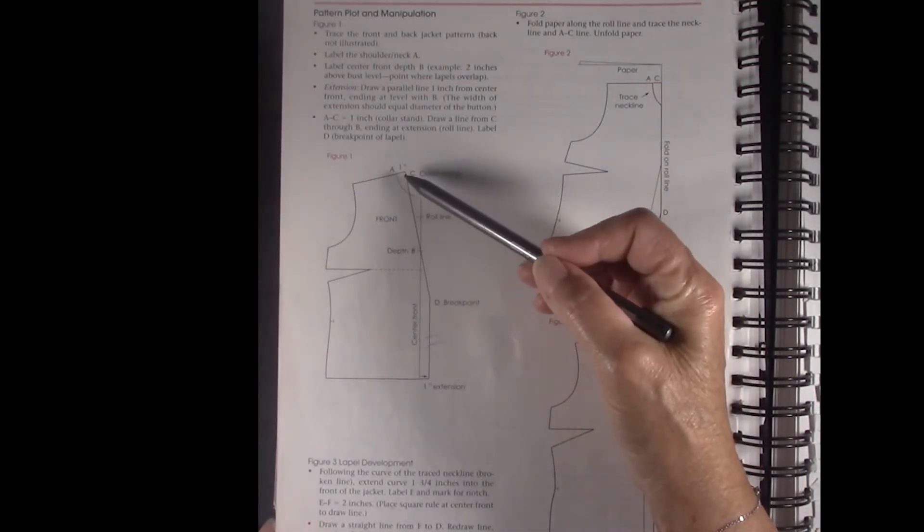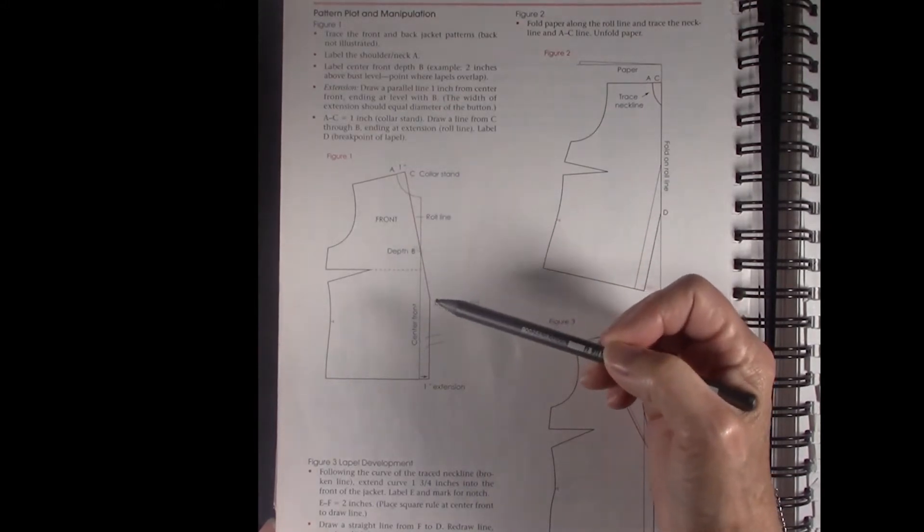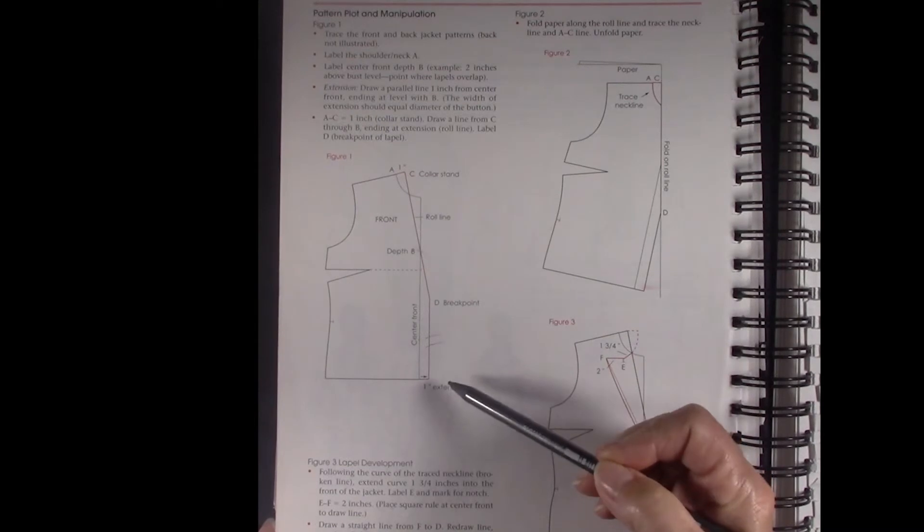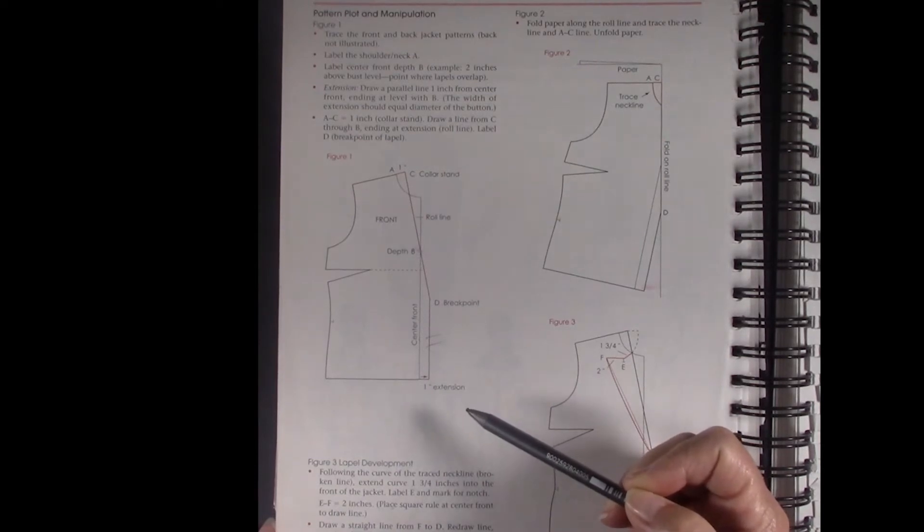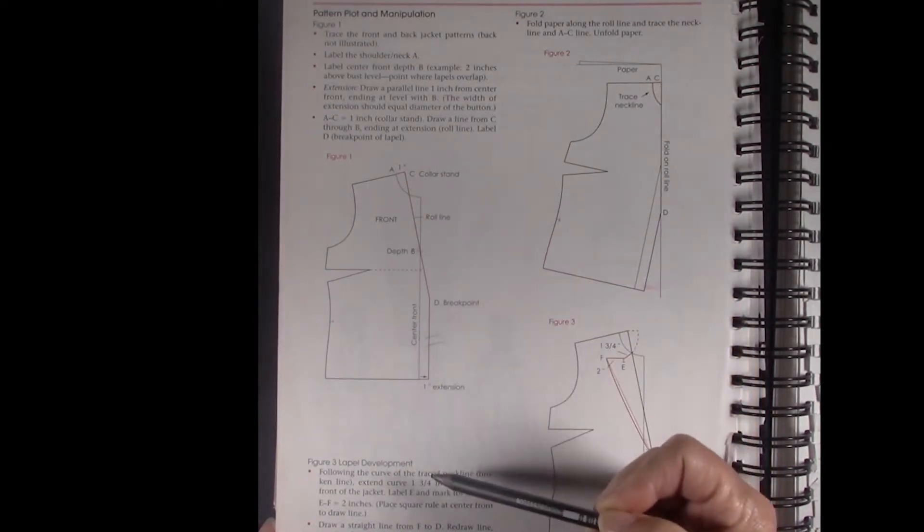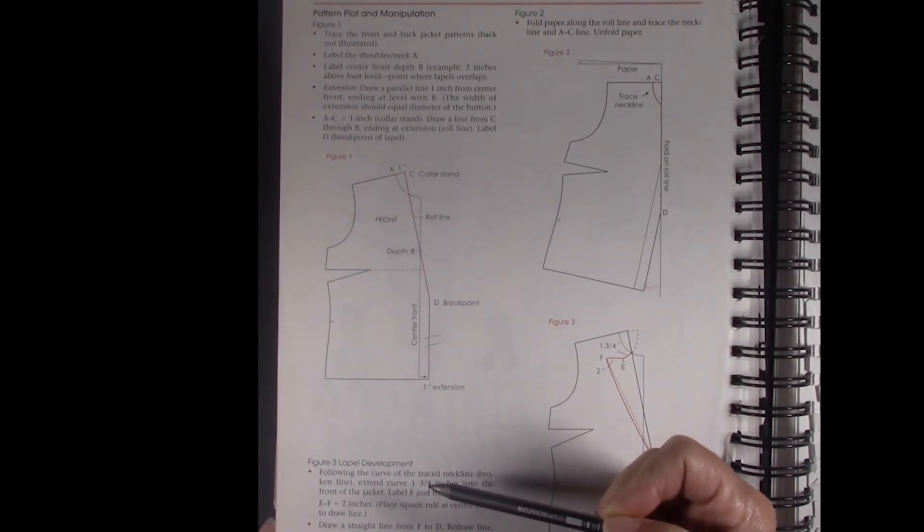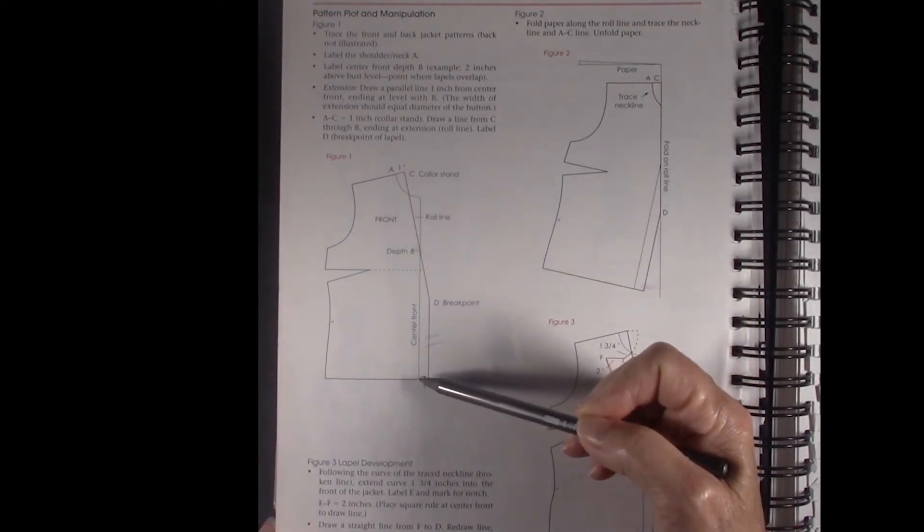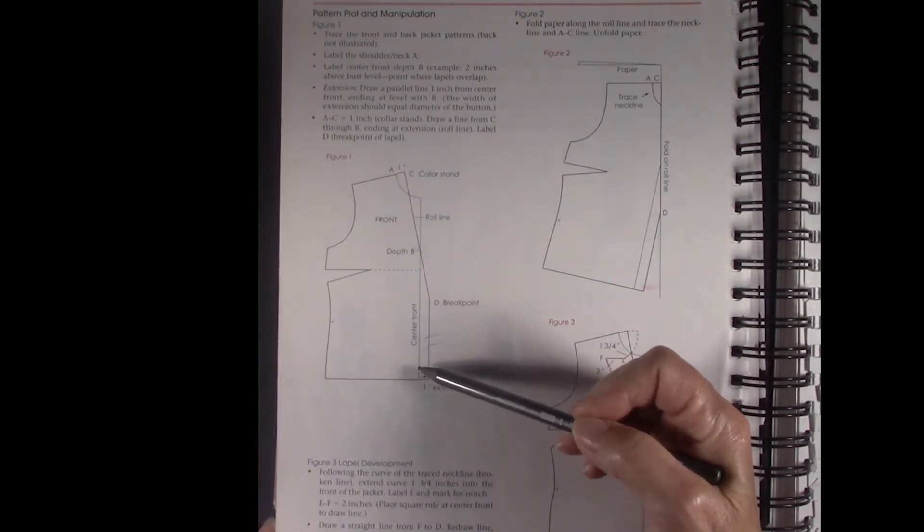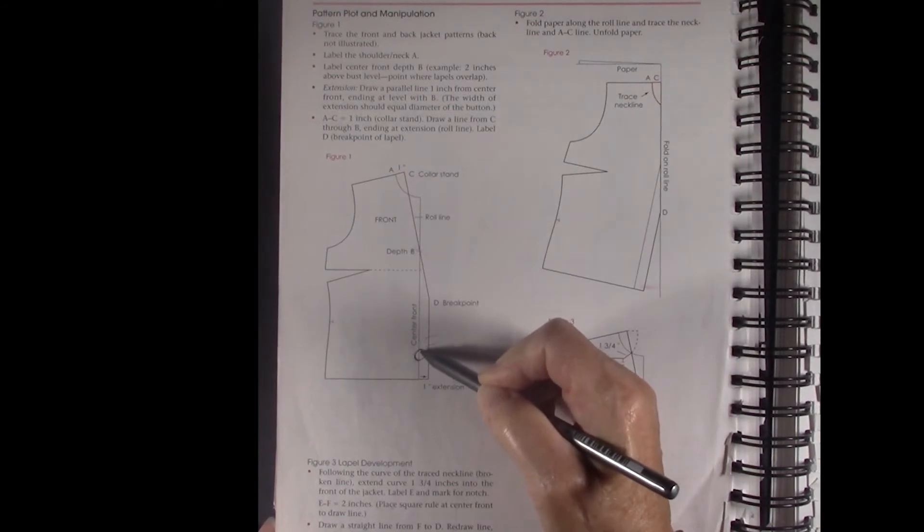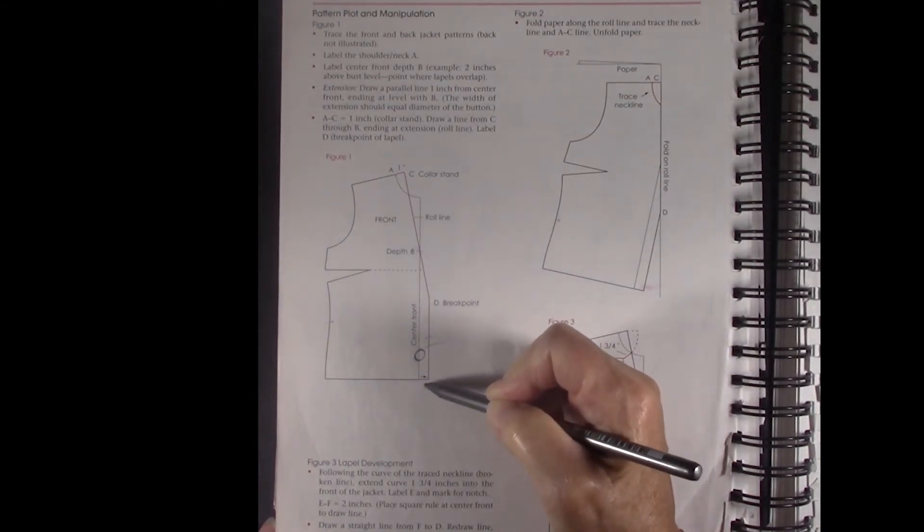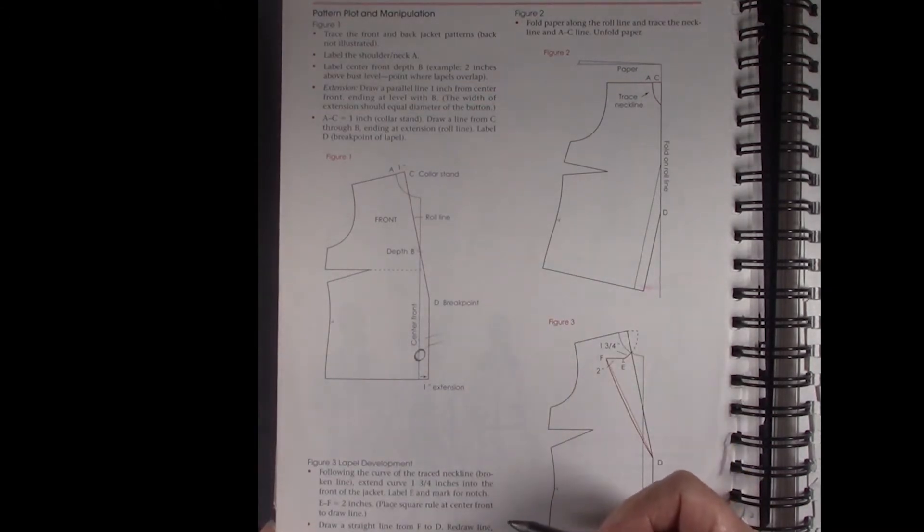Here we've built in a little bit for the collar stand to develop the angle of our roll line. You have the one inch extension but that extension really depends on your button. Of course you always want to keep track no matter what you do of dead center front. At dead center front is the dead center of the button. So the buttons will go right here dead center on the center front line. So this is where the extension comes in. Usually it's half the size of the button plus three eighths of an inch.